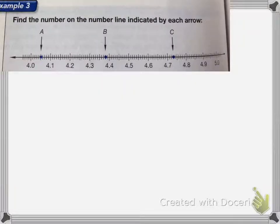All right, this one wants us to find the number on the number line indicated by each arrow. So here we have between 4.0 and 4.1, there are 10 tick marks in between those two.